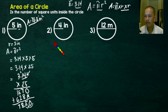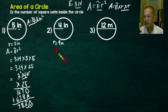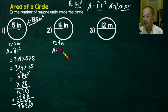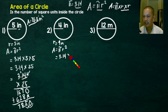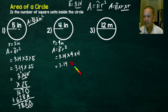Let's proceed to question number 2. Our radius here is equal to 4 inches. We write the formula: A equals pi r squared. The value of pi is 3.14, times the radius, which is 4, times 4. We copy 3.14. 4 times 4, you get 16.